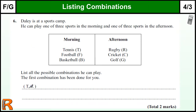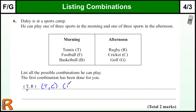One is done for you to give you a clue how to set it out. The key here is just to be consistent. So: tennis and rugby. I would keep one of them the same — keep tennis the same and just see what else you can do with tennis. You could do tennis and cricket, since we've done rugby. We could do tennis and golf.